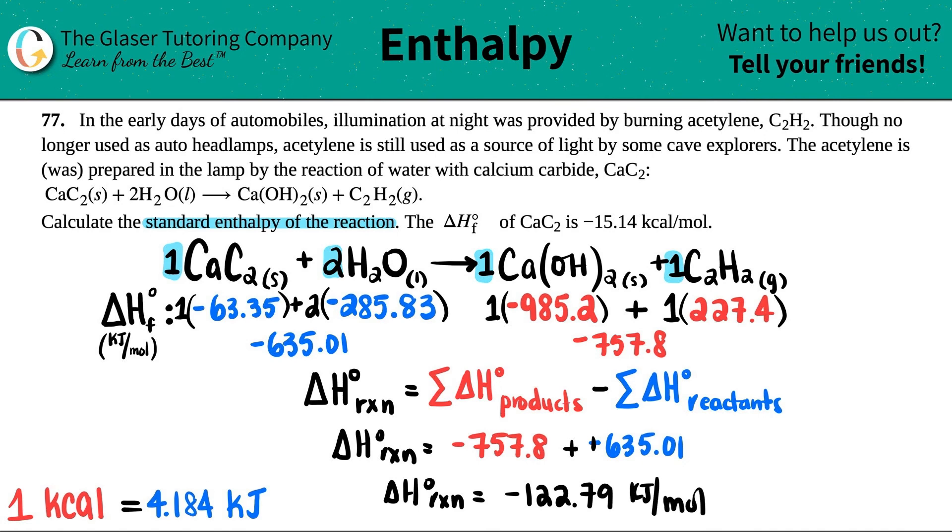So I get negative 122.79 kilojoules per mole. And that is it. We did it. So this reaction is going to release some heat. I know it's going to release because there's a negative. How much? 122.79 kilojoules per one mole. And that's it.